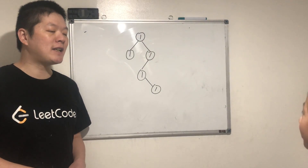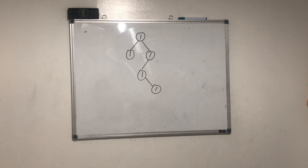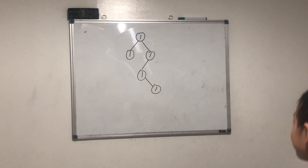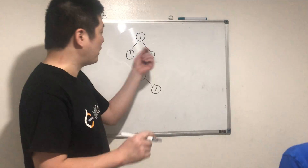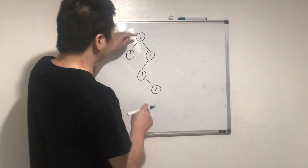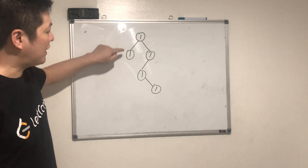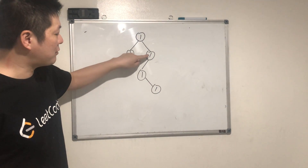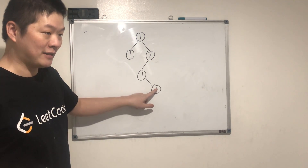Okay, so how many kids maximum? Maximum of two kids per one parent. One parent, but two kids maximum, right? Two kids, because binary means two. Look, this parent — let's go to the root — has maximum two kids, but this one only has one, and this one has none.